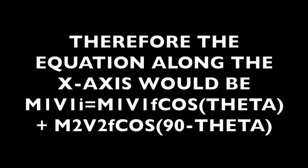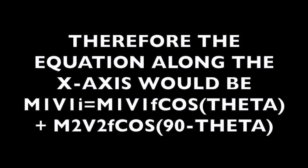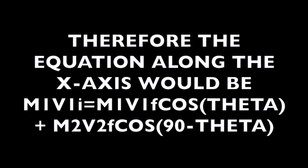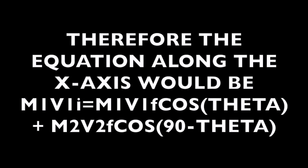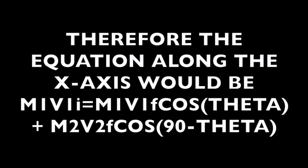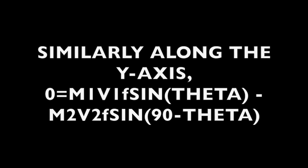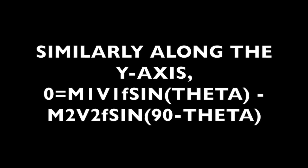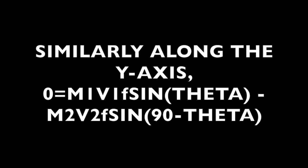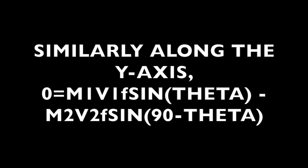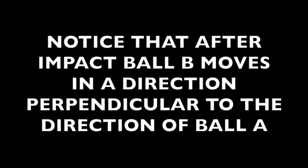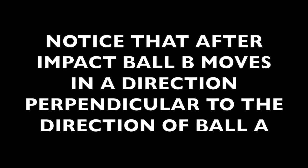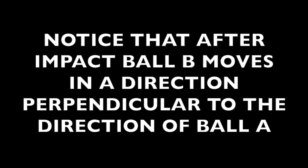After the collision, the total momentum along x and y are separately conserved. Therefore, the equation along the x-axis would be m1 v1 initial equals m1 v1 final cosine theta plus m2 v2 final cosine 90 minus theta. Similarly, along the y-axis, zero equals m1 v1 final sine theta minus m2 v2 final sine 90 minus theta. Notice that after impact, ball b moves in a direction perpendicular to the direction of ball a.